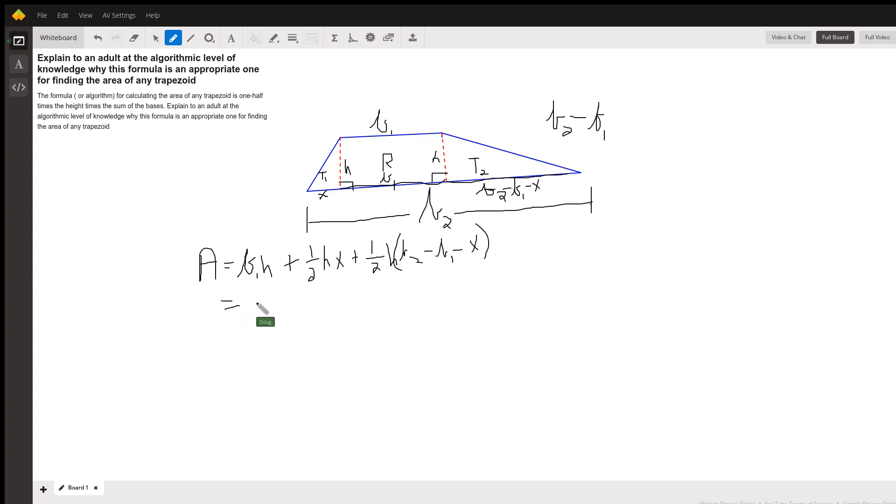And if I distribute that one-half H across the terms inside the parentheses, I get plus one-half H B sub 2 minus one-half H B sub 1 minus one-half H X. And here's what happens. So I've got a one-half H positive, one-half H X negative, so the X's disappear.